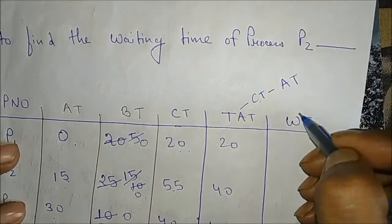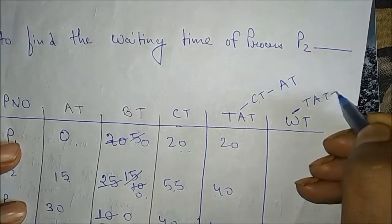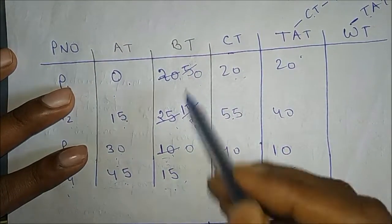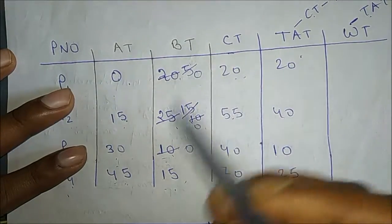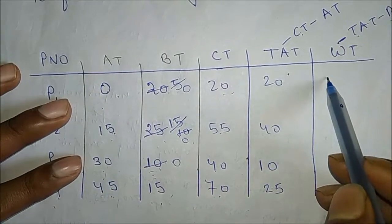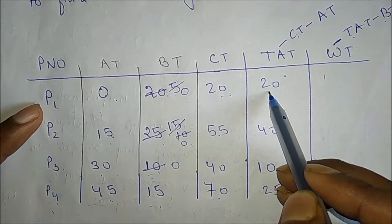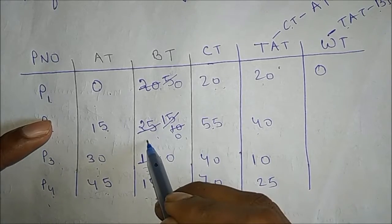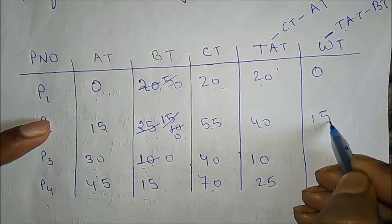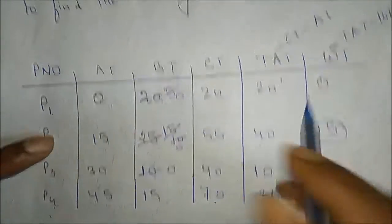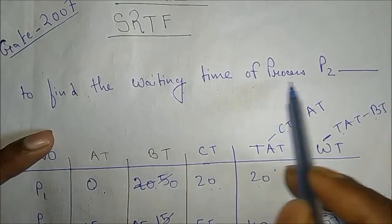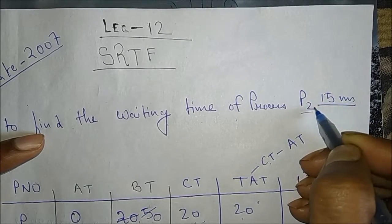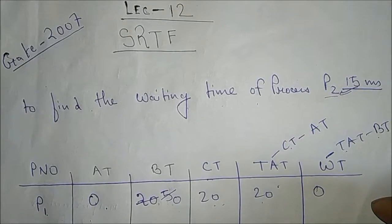The waiting time formula is: Waiting Time = Turnaround Time − Burst Time. The actual burst times are P1=20, P2=25, P3=10, P4=15. For P1: 20 − 20 = 0. For P2: 40 − 25 = 15. Since the question asks only for the waiting time of P2, the answer is 15 milliseconds, which matches option 15 in the given choices.